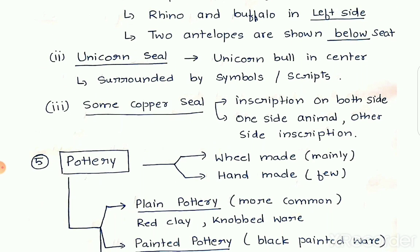Some copper seals are also found with inscriptions on them, which have not been deciphered till date. In some seals, inscriptions are found on both sides; in others, one side has inscriptions and the other side features animal figures.